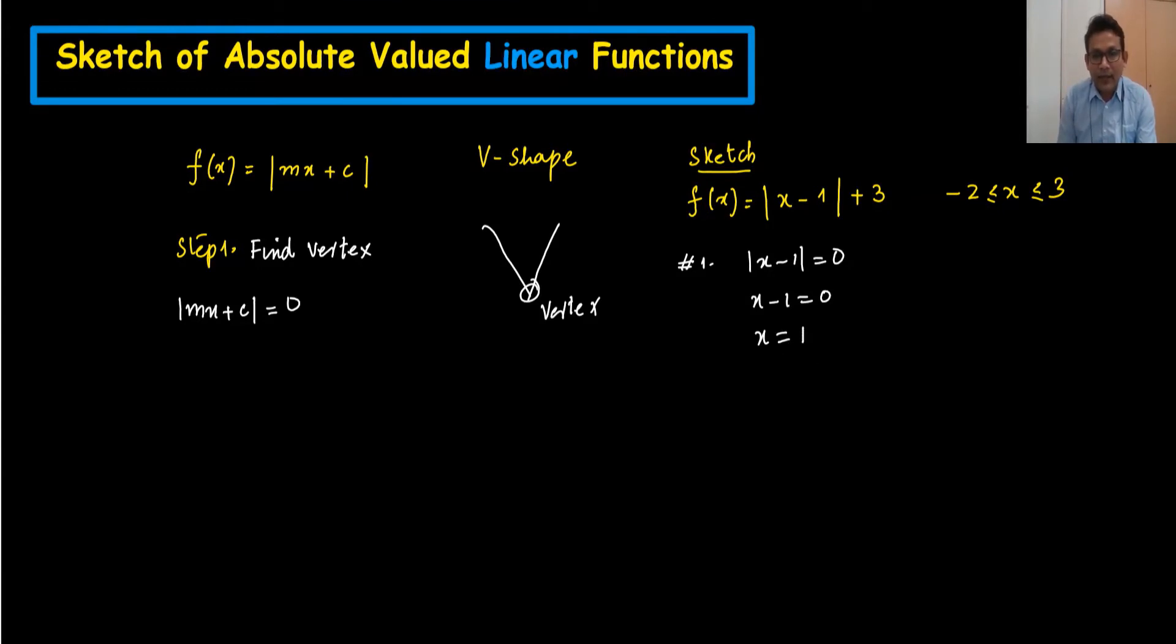Now x is 1. I put this value in the given equation. So f(x) which is y equals, I put 1 here now. 1 minus 1 is coming 0, so it's coming 3. So the coordinates of the vertex are (1, 3). So we got the first thing.